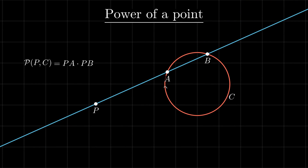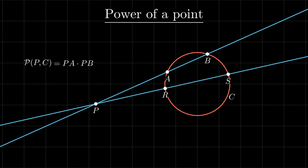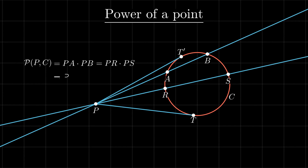This theorem tells us that the product is independent of the line chosen. Specifically, if we draw a line tangent to the circle with T as the tangent point, the theorem tells us that P-T squared equals P-A times P-B. Therefore, for points outside the circle, the power of a point is just the square of the tangent's length.